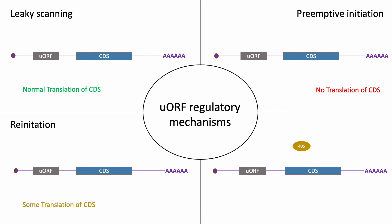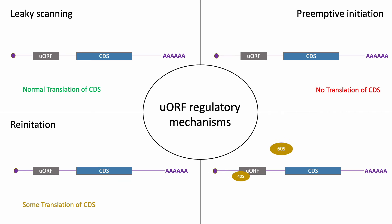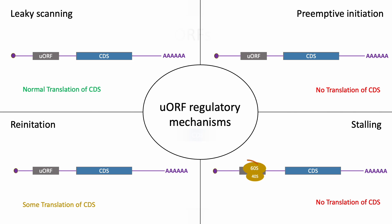In some cases, the ribosome may also stall at a UORF, which will block other incoming ribosomes or trigger mRNA degradation, also preventing translation of the gene's main coding region.